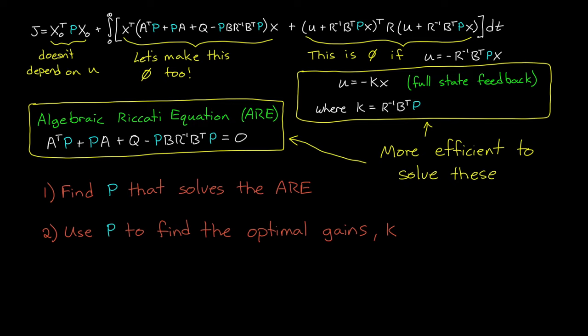Now, to be fair, closed form solution doesn't always exist for it, and so we do have to rely on numeric methods to find the matrix P. But that's relatively simple. And since this equation is quadratic with respect to P, there are up to two possible solutions for each dimension in the system. However, there's only one of those solutions that's going to produce a stable closed loop system. So we're really looking for the one stabilizing solution if it exists.